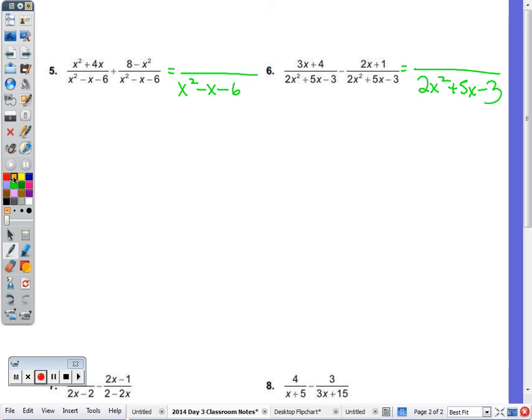And now I need to combine the numerators. So when I combine this expression, x squared plus 4x plus 8 minus x squared. If you have a negative x squared and you're adding a positive x squared, what happens to the x squared? They cancel out. So those are gone. x squared plus a negative x squared is 0. We end up with 4x plus 8.